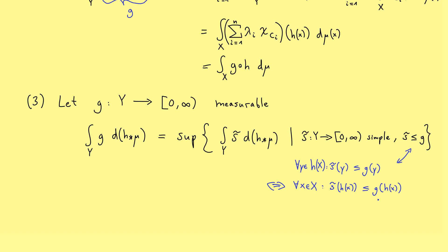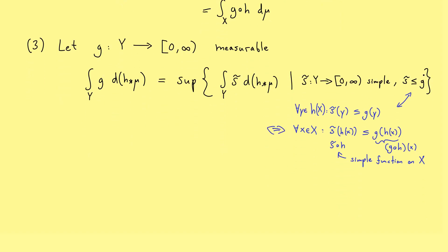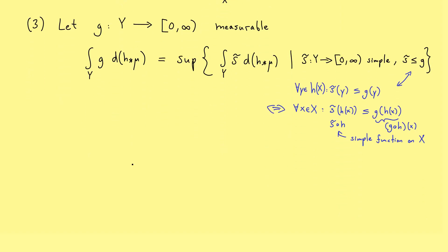This means that on the right-hand side, we have the function g ∘ h at the point x. And on the left-hand side, we have the function s̃ composition with h. And now please recall the beginning of this video. We have shown that this is again a simple function, but now on the set X. And with this, we have indeed gained something. We still have the supremum here, but inside we know that the substitution rule holds for simple functions.